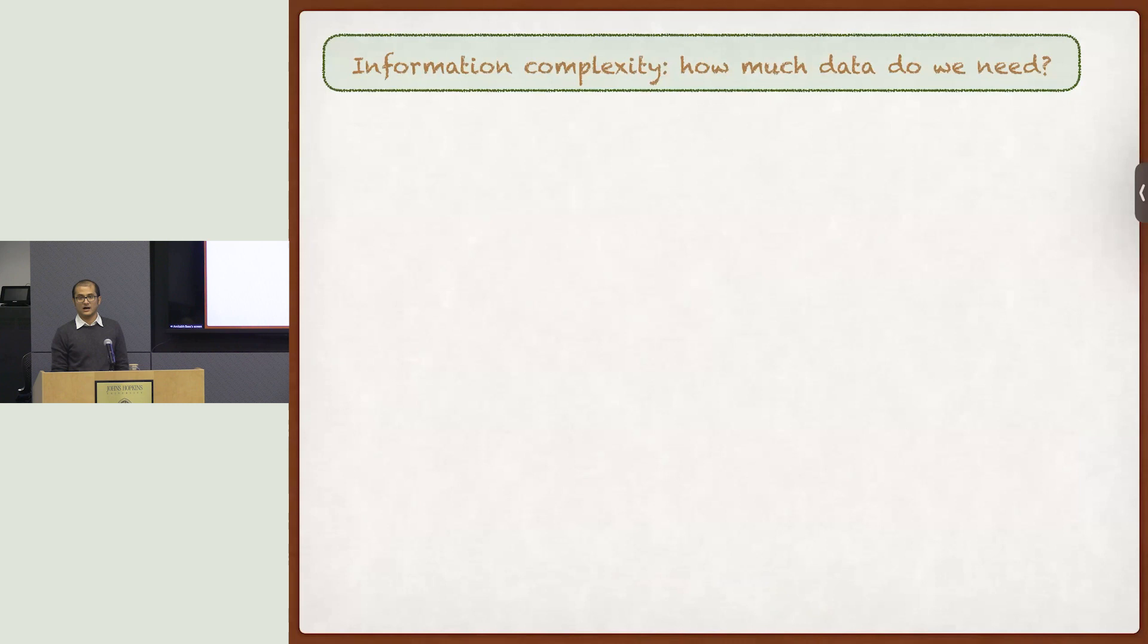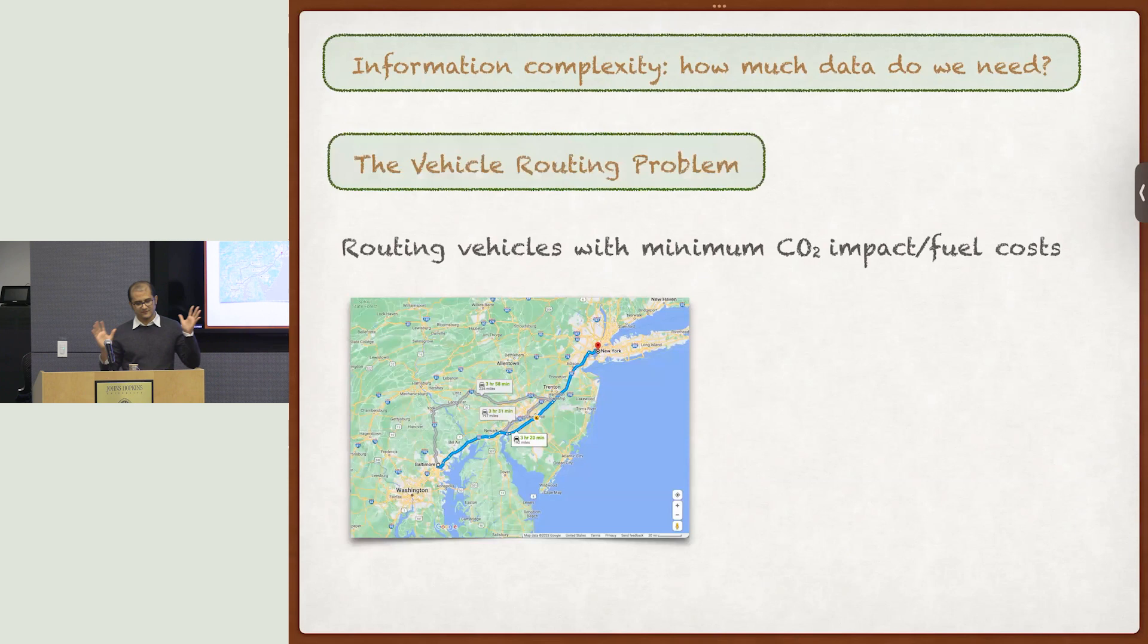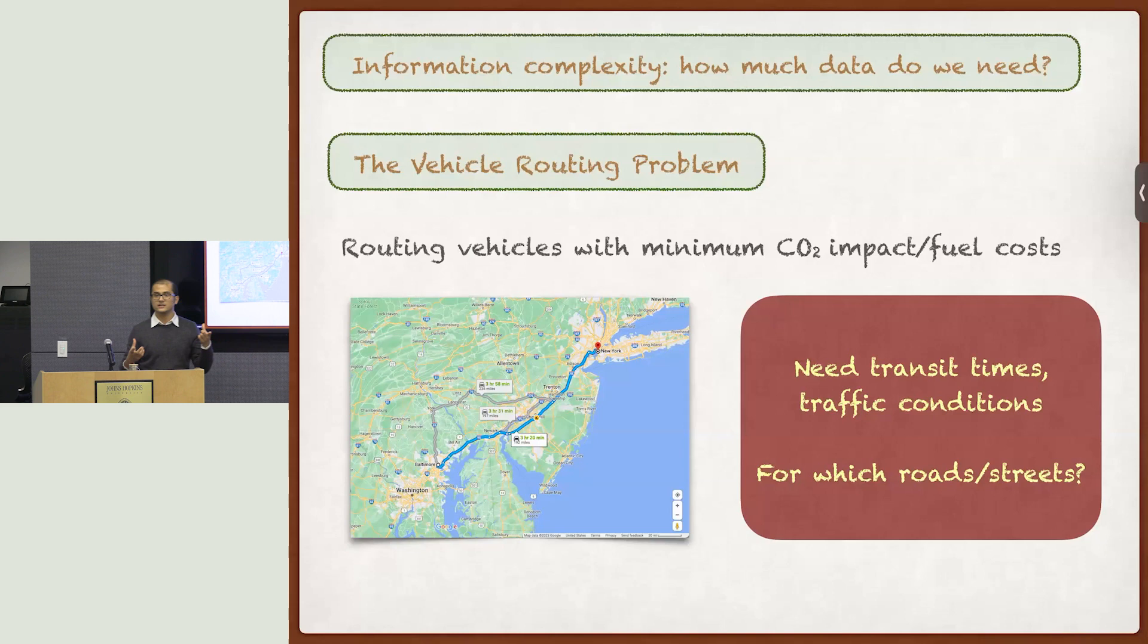Okay. So these are three problems in totally three different domains. So what's kind of common to all of them? Well, it's actually a buzzword that you hear all the time right now. It's data. So what's the question? The question is, so let's look at the vehicle routing problem. You want to route this. You want to figure out the best way to drive from Baltimore to New York to use the least amount of fuel, for example. Okay? So you certainly need to know the transit times on the different roads and highways, the traffic conditions, et cetera, to be able to solve this problem. Okay? But do you really need to know this for every road in the United States? Not really. I mean, you don't really care about what's going on in California.